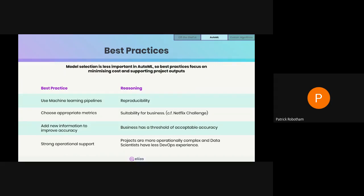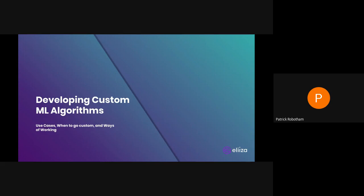Data scientists often come from academia and have less DevOps and cloud experience because they're so focused on the mathematics. So if you're doing your own machine learning project, it's probably worth assigning a platform engineer or DevOps specialist.